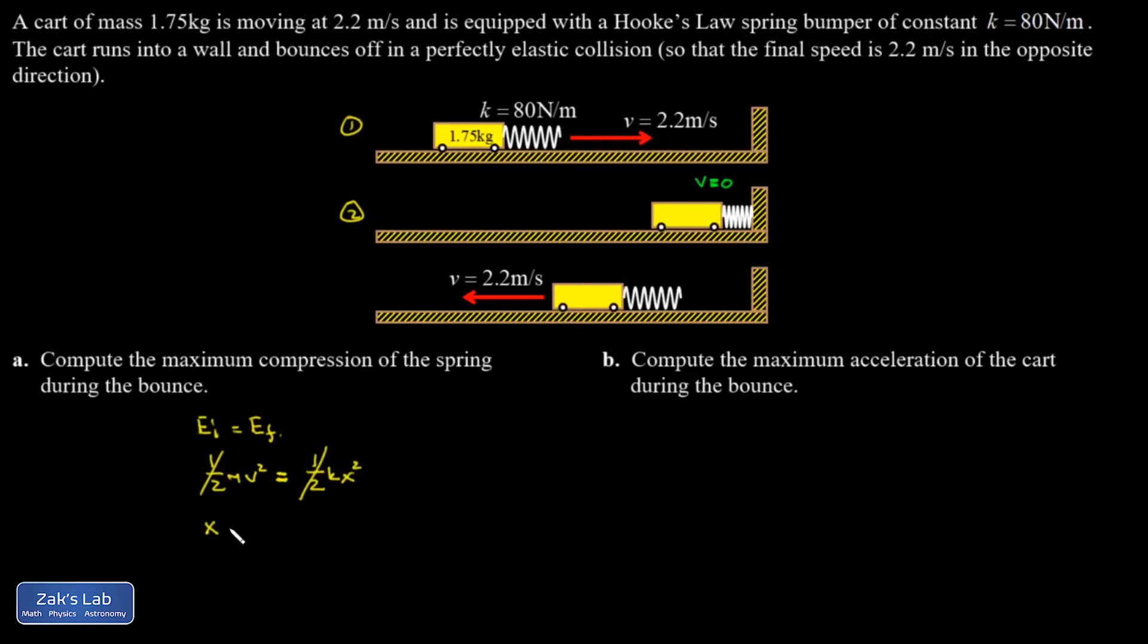Cancel the 1/2, and I can solve for x immediately. So I'm going to divide both sides by k and then square root the result. You could pull out the V if you like, but I'm just going to leave it there: mV squared over k. Plug in our numbers and we've got the max compression.